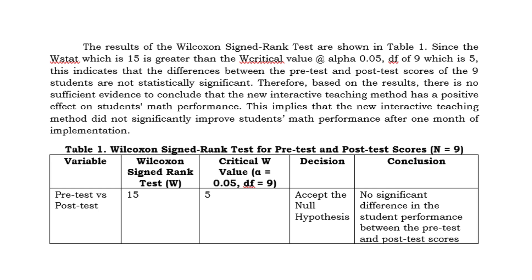This is how the interpretation will look in our manuscript. The interpretation appears in the upper part of our table, and as you can see, our table has five different columns.